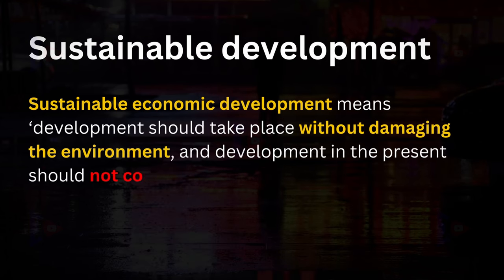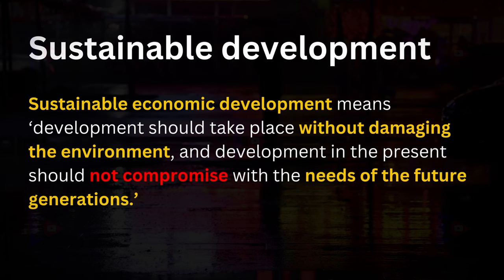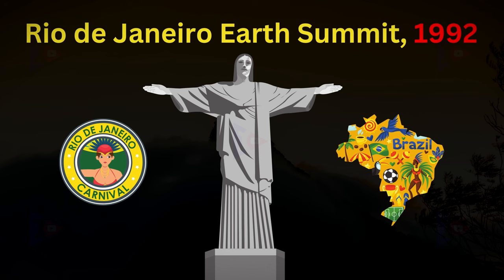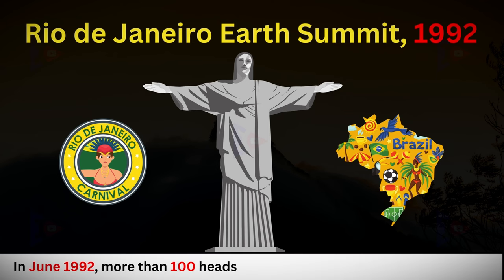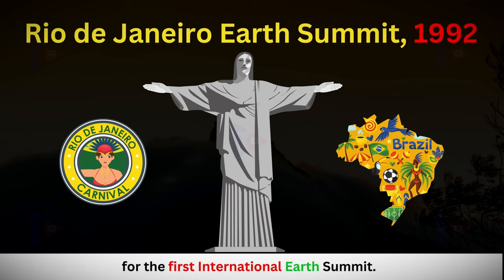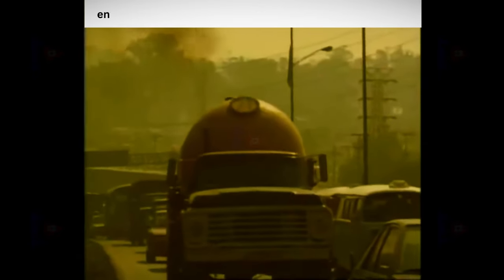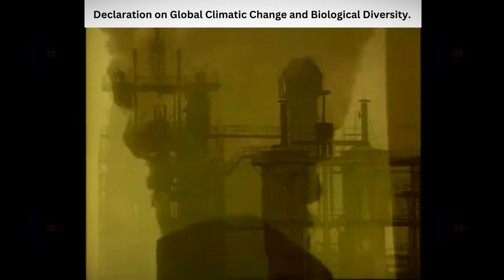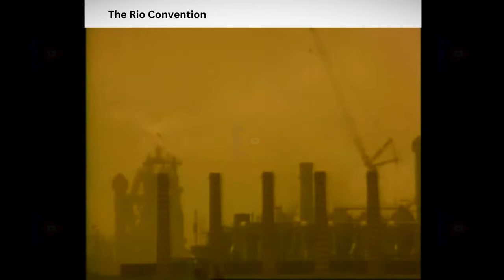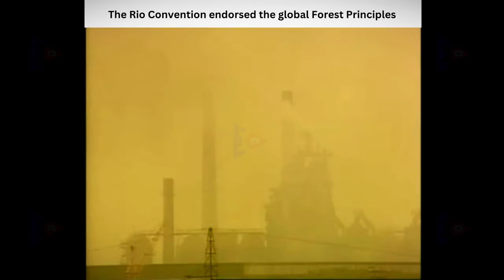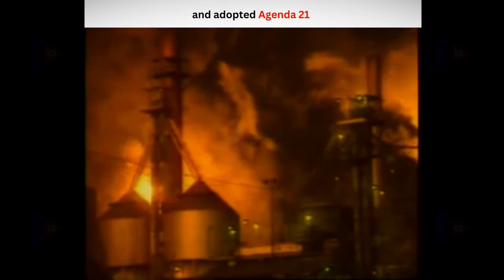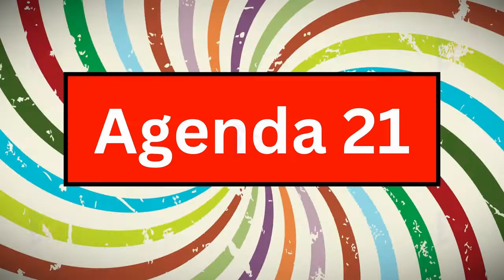Rio de Janeiro Earth Summit 1992: In June 1992, more than 100 heads of states met in Rio de Janeiro, Brazil for the first international Earth Summit. The summit addressed urgent problems of environmental protection and socio-economic development at the global level. The assembly leaders signed the declaration on global climate change and biological diversity. The Rio Convention endorsed the global forest principles and adopted Agenda 21 for achieving sustainable development in the 21st century.